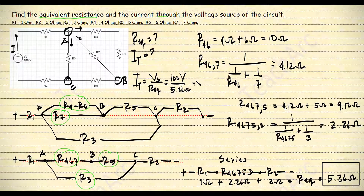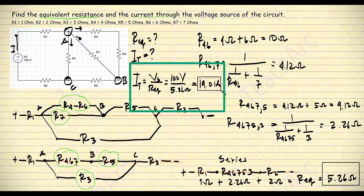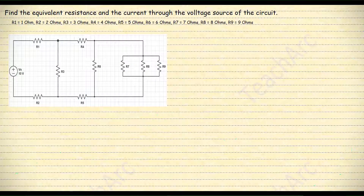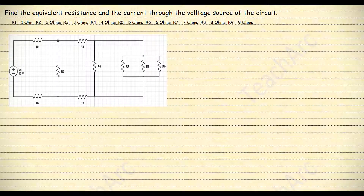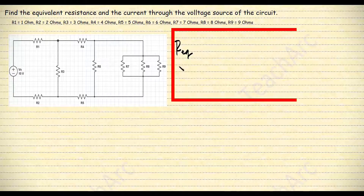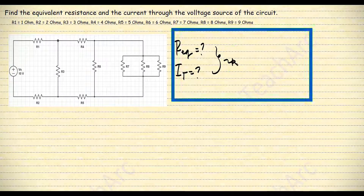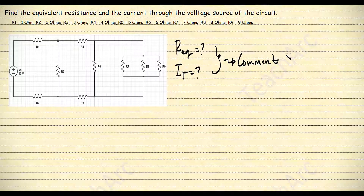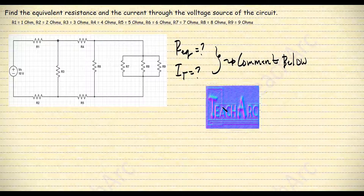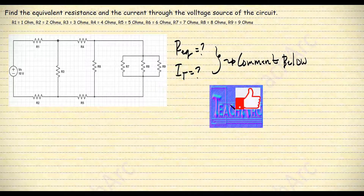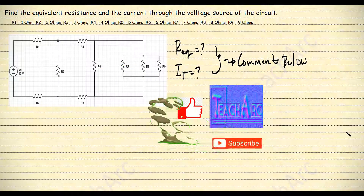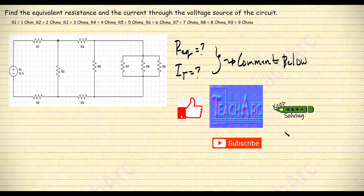I hope you are getting used to it, but if not, you can always try the regular method. Try to simplify the next circuit using any method and comment the values of equivalent resistance and total current in the comment section below, and let's compare our answers later on. That's it for me today — have a good day and keep solving!